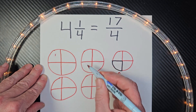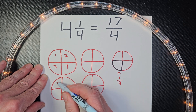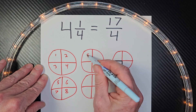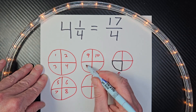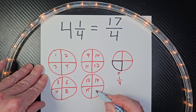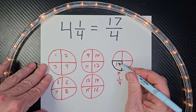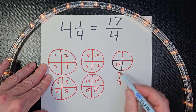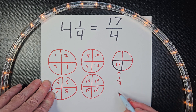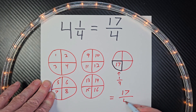So I have one, two, three, four, five, six, seven, eight, nine, ten, eleven, twelve, thirteen, fourteen, fifteen, sixteen, and seventeen right here. I have seventeen one-fourth pieces, and that would equal seventeen over four.